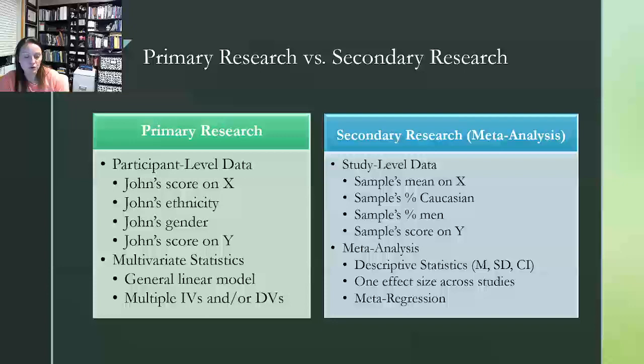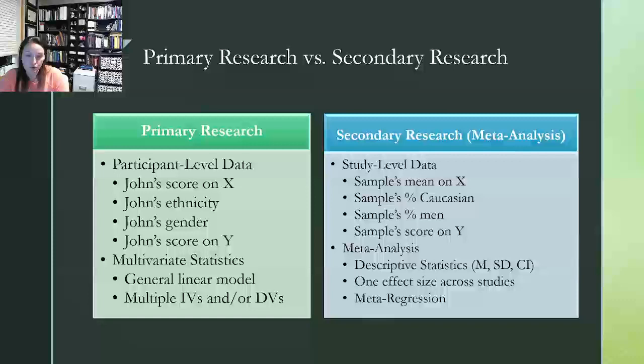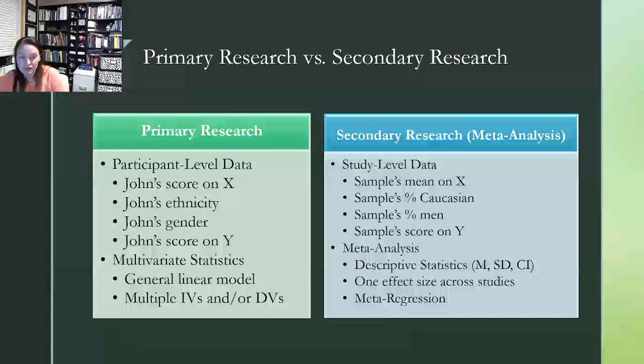In secondary research, so meta-analysis, we are looking at things really from an aerial view. So we're looking at study level data. So we are looking at a sample mean or a sample percentage of men, ethnicity, things like that. So we're looking at summary level data. And so we're going to be looking for statistics, like descriptive statistics, so means, standard deviations, things like that. And we're going to look for one effect size across studies.